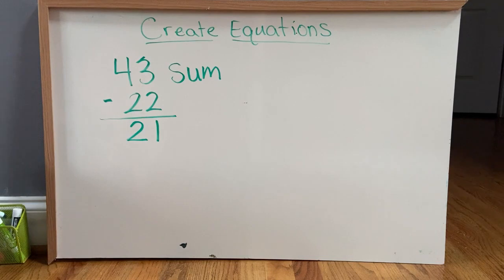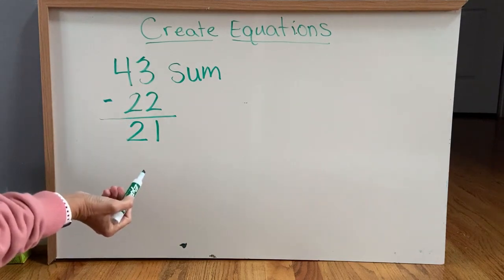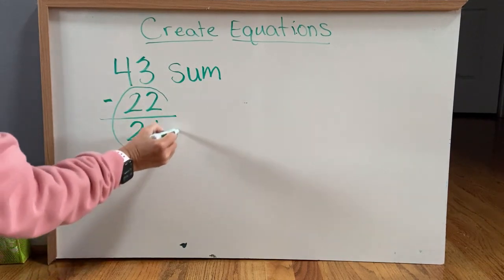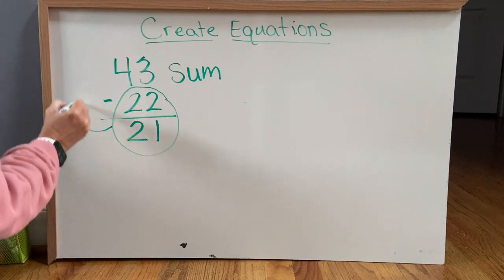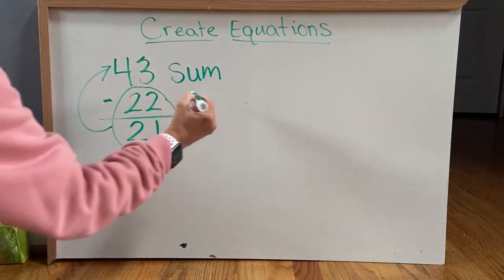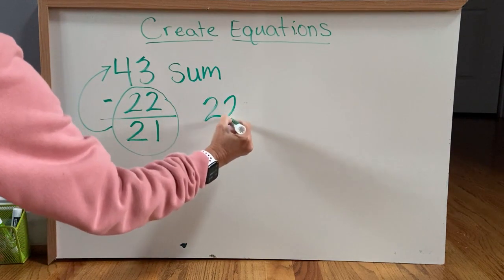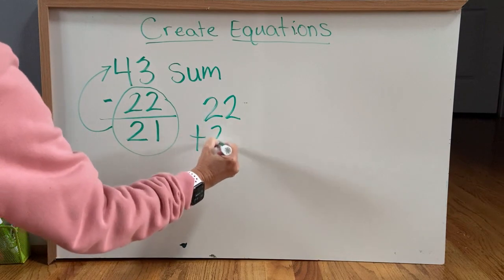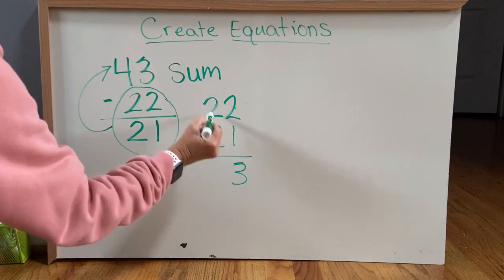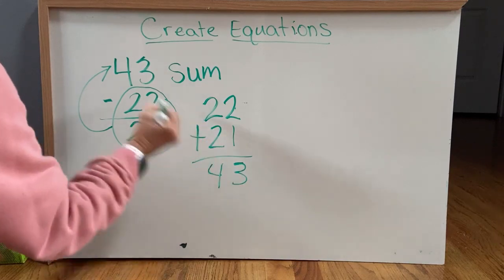And then we know, just from math that we've done before, that if we take these two and we add them together, it should equal that. That's how we check our answer. So let's see, 22 plus 21, 2 plus 1 is 3, and 2 plus 2 is 4, 43.